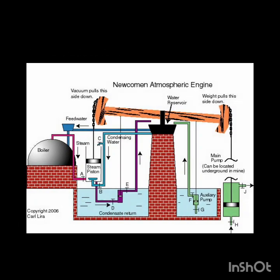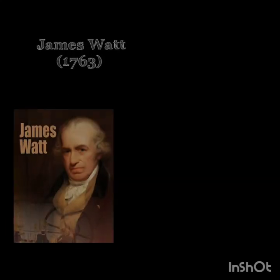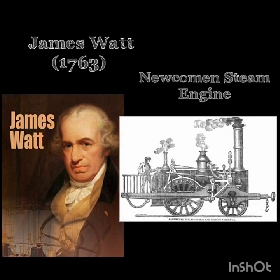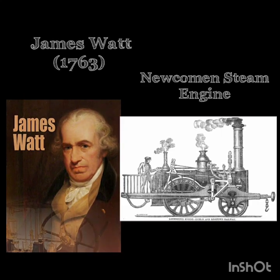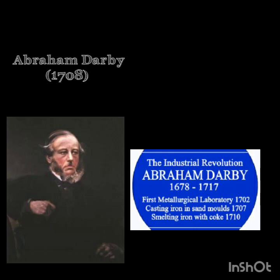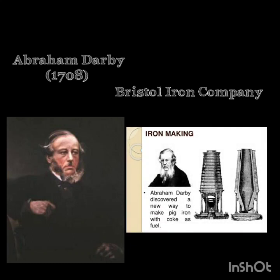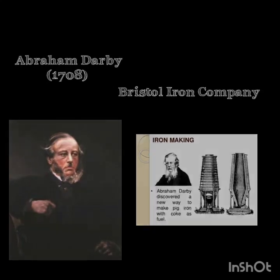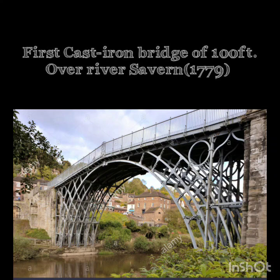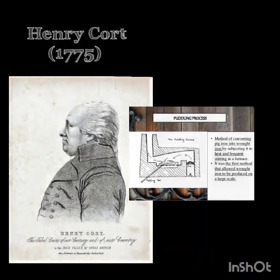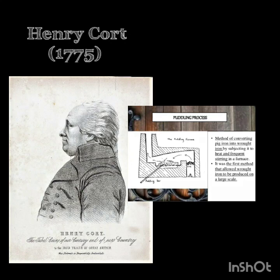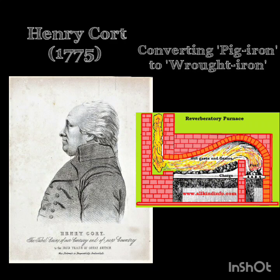The process of industrialization in England was not confined to the textile industry alone. In 1763, a Scottish mechanic called James Watt perfected the Newcomen steam engine and made it a practical device for use in operating machines. Darby Abraham founded the Bristol Iron Company in 1708, and he is generally acknowledged as the first man to use coke successfully in the smelting of iron ore. His grandson Abraham (1750–91) built the first cast iron bridge of 100 feet spanning over the river Severn in 1779. In 1775, Henry Cort bought an ironworks near Plymouth and invented the puddling process for converting pig iron into wrought iron, as well as a system of groove rollers for the production of iron bars.